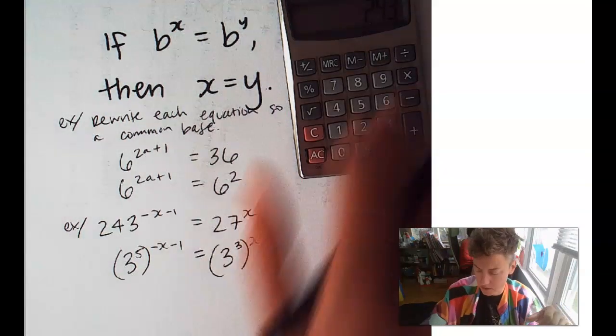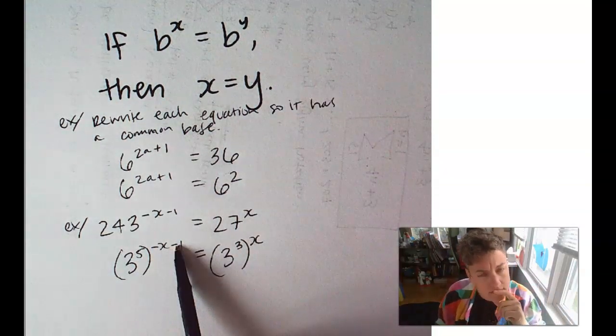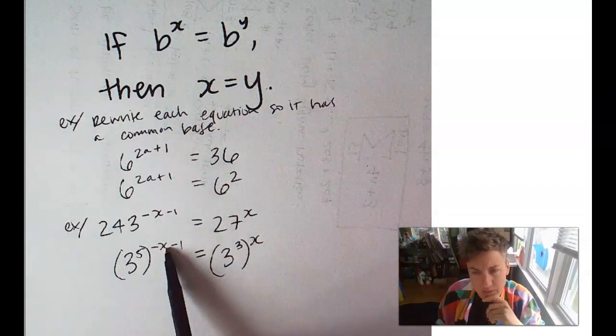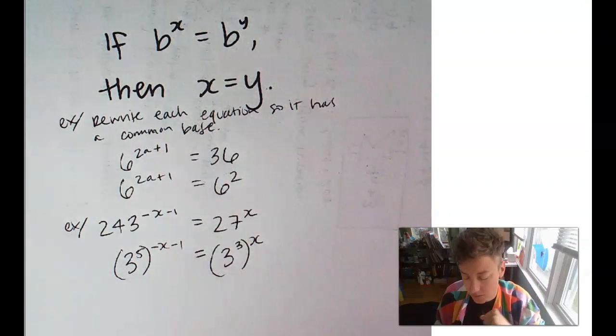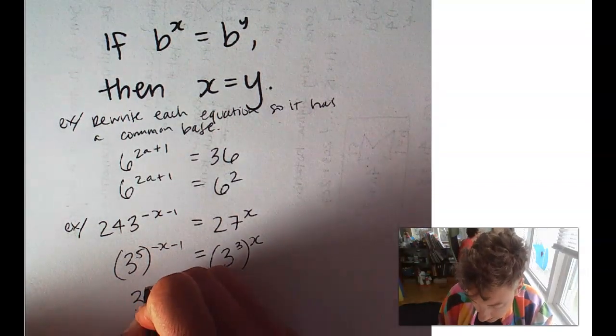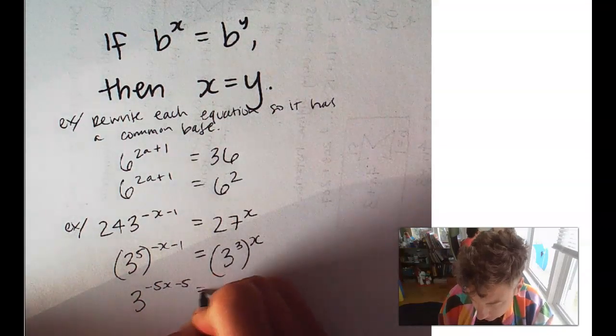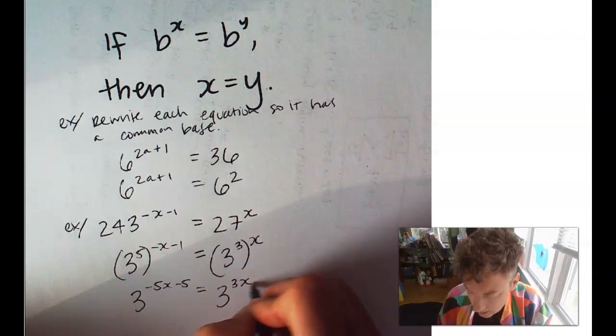And, just for good measure, what would we do with these exponents? We have an exponent to an exponent. You're correct. We're going to multiply. So, this would become 3 to the negative 5x minus 5 equals 3 to the 3x.